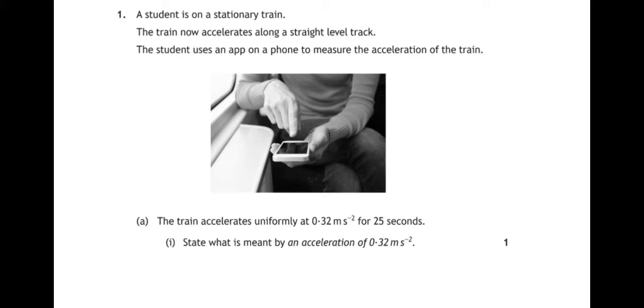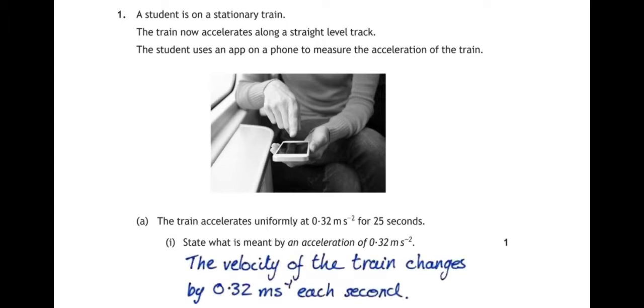Well, an acceleration is a change in velocity over a period of time. So the acceleration of 0.32 meters per second means that the velocity changes at a rate of 0.32 meters per second every second.